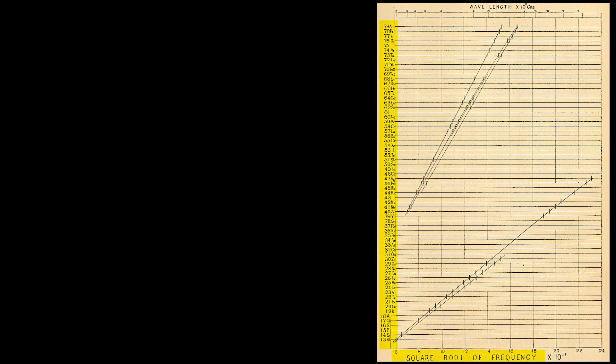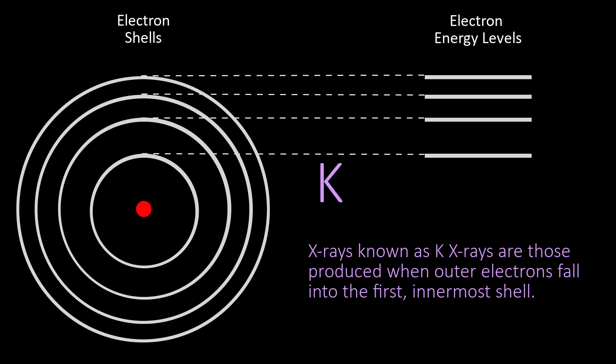He found he had two groups of perfect straight lines. These came from K-X-rays, made when outer shell electrons fall to the first electron shell, and from L-X-rays, made when outer shell electrons fall to the second electron shell.